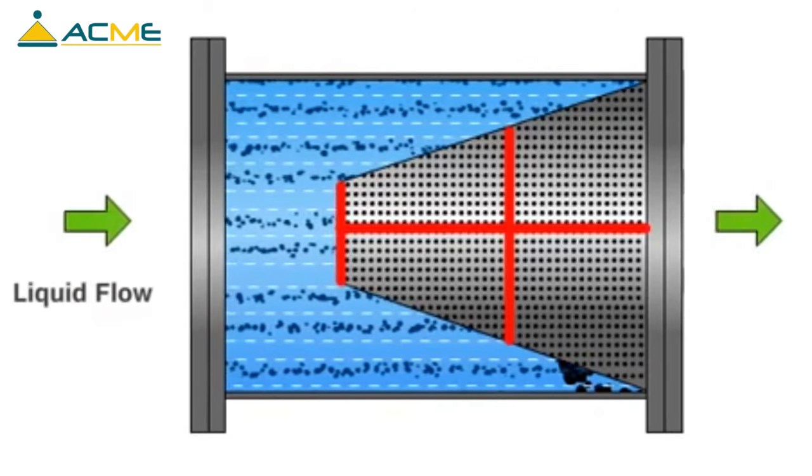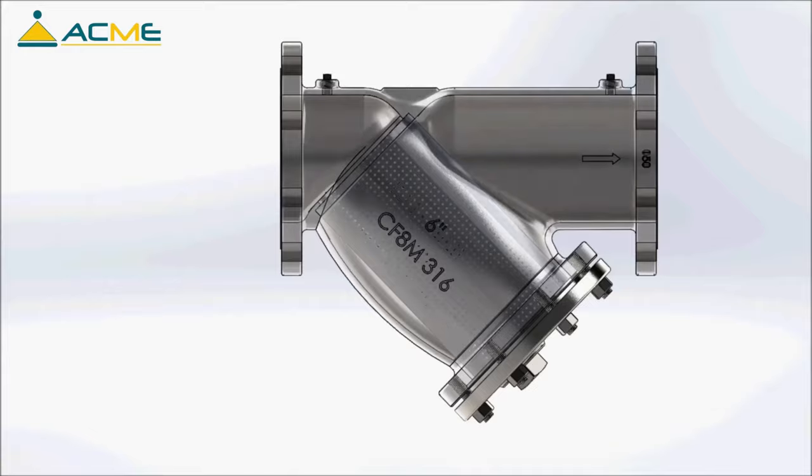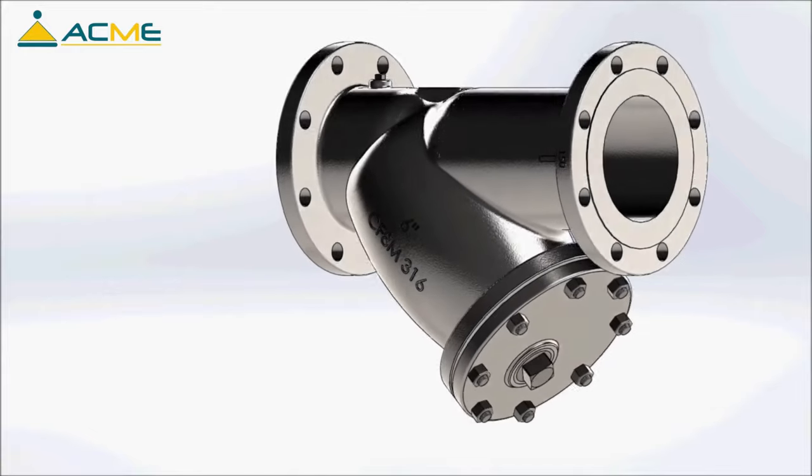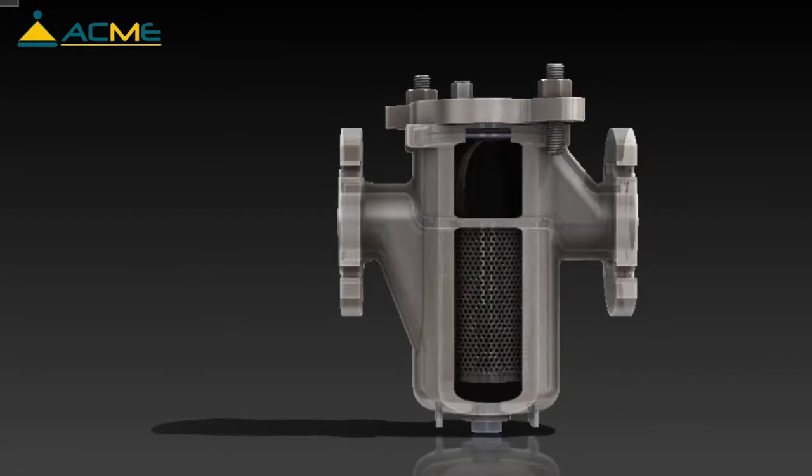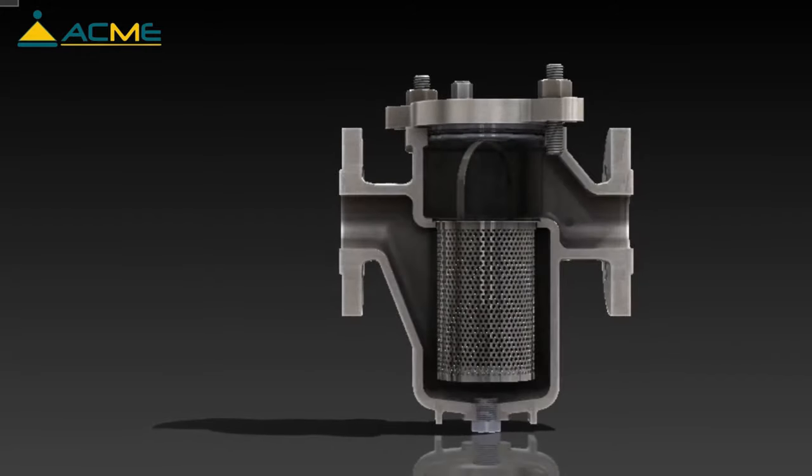These strainers are installed upstream of equipment like pumps, control valves, and traps. Keeping potentially corrosive or damaging debris from making its way down the line, they can be installed alone or in a series to increase filtration.